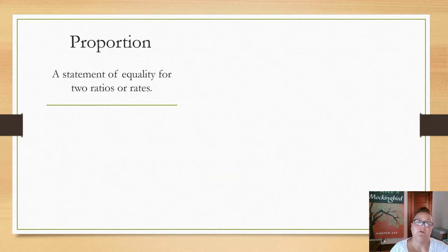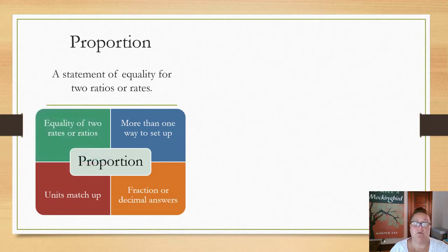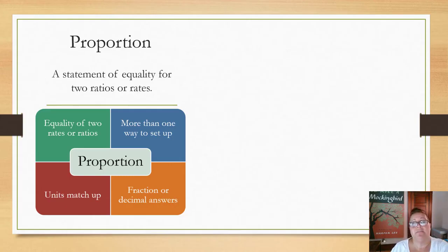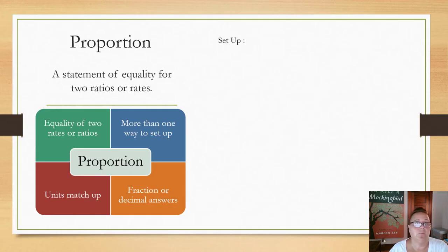A proportion is defined as a statement of equality for two ratios or rates. It should be noted that there is more than one way to set up a proportion, that proportions themselves will often contain fractions or decimals, and that they can have fraction and decimal answers. The important part of a proportion is making sure that your units match up — if your units are out of sync with each other, you will get a wrong answer.